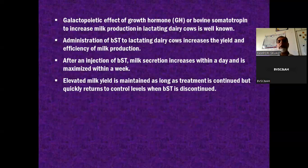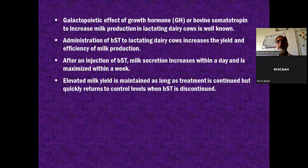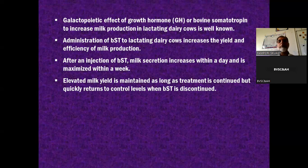In lactogenesis, the mammary gland has acquired physiological competence - in other words, functional competence to produce, synthesize, and secrete the milk from these mammary secretory cells. To maintain that secretory functioning of these epithelial cells or alveoli, we name it as galactopoiesis - maintaining the synthesis and secretion of milk from these mammary glands.